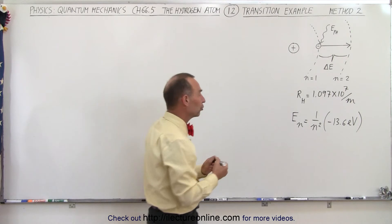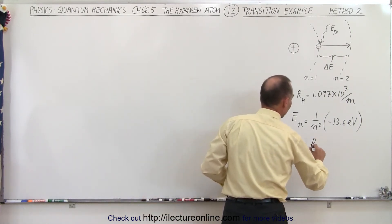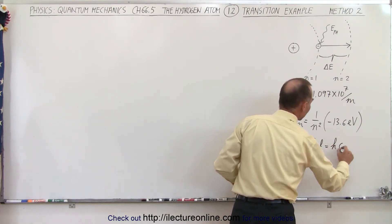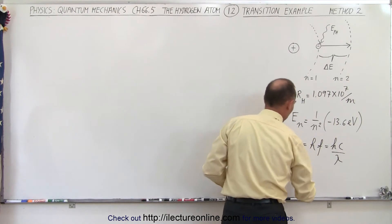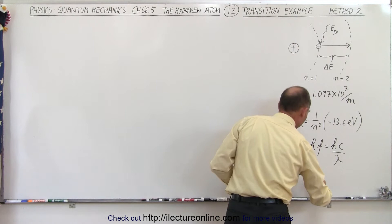In addition to that, we should also realize that the energy of a photon can be defined as Planck's constant h times the frequency, which is h times the speed of light divided by the wavelength, which means the wavelength is going to be equal to hc over the energy of the photon.